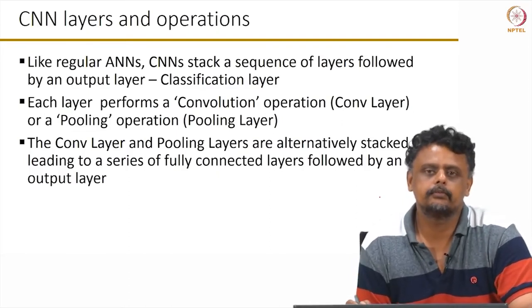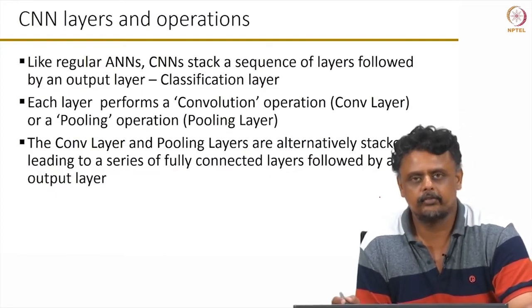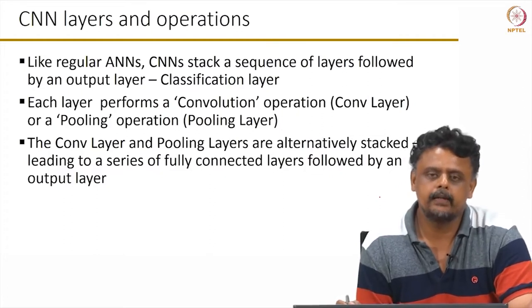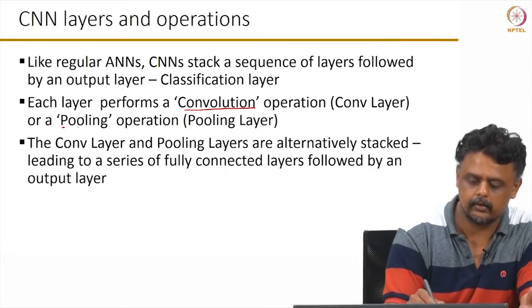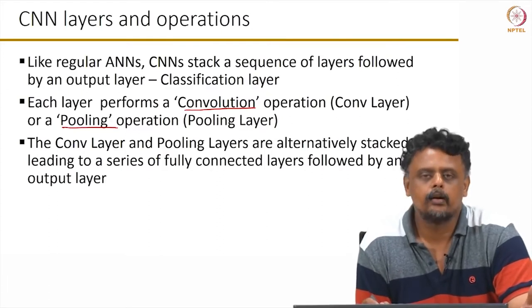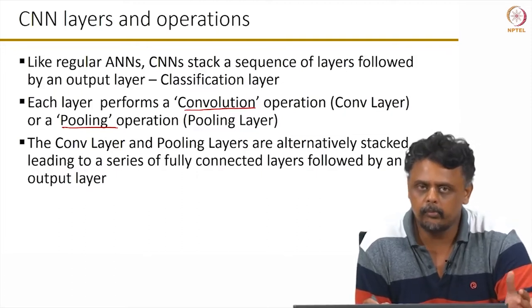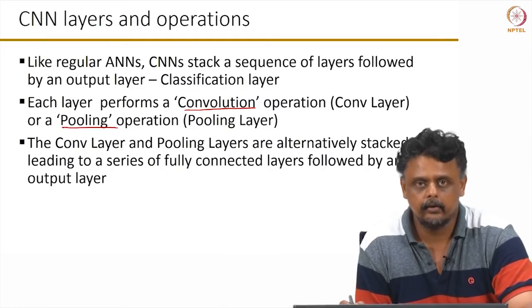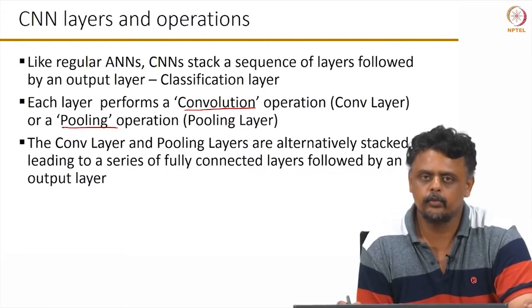So what does a CNN consist of? CNNs, like ANNs, consist of a sequence of hidden layers, but these hidden layers are basically convolutions or pooling. It is an alternation of convolution and pooling layers followed by a series of fully connected layers, just like in an artificial neural network, leading to a classification layer. This is the typical structure of a convolutional neural network.